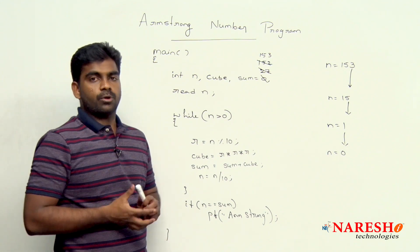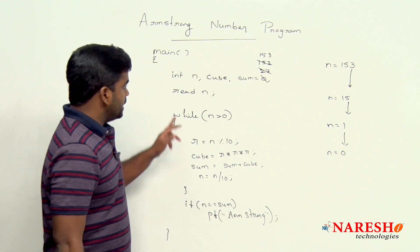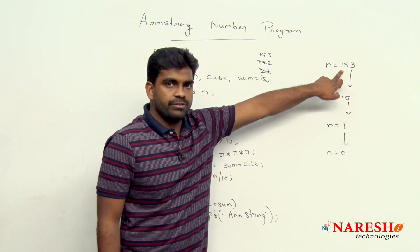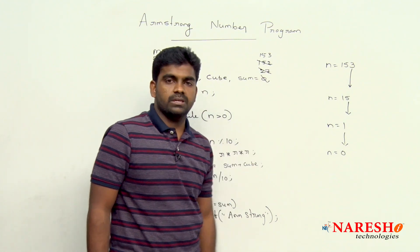Here you will face one problem. What is that problem? Here sum value is 153, ok, but see now n value is initially 153, but finally, what is that n value? 0 is a problem.